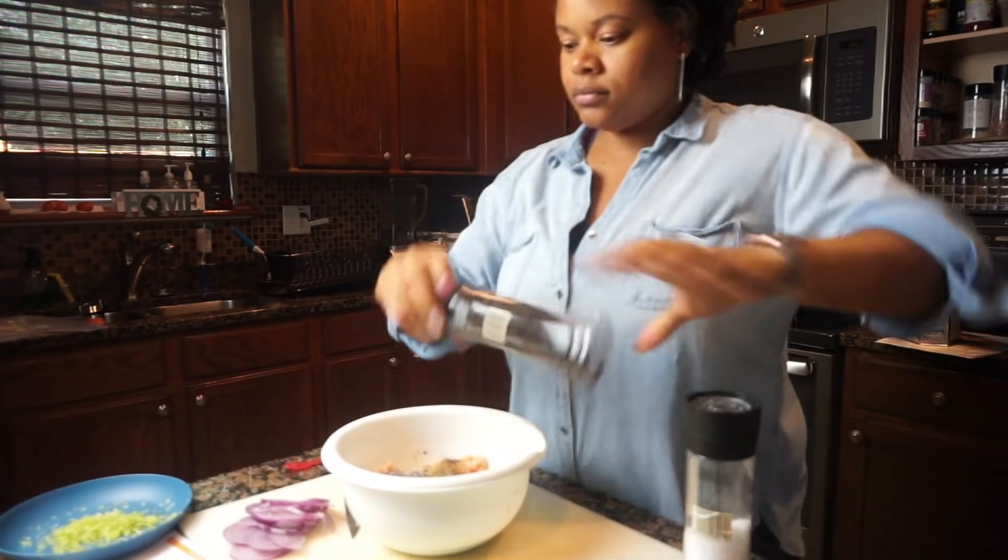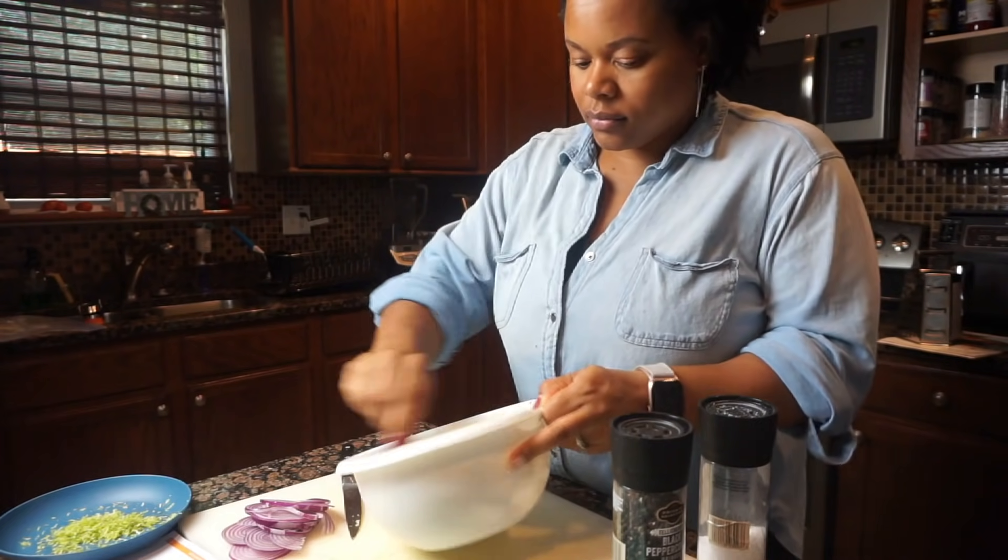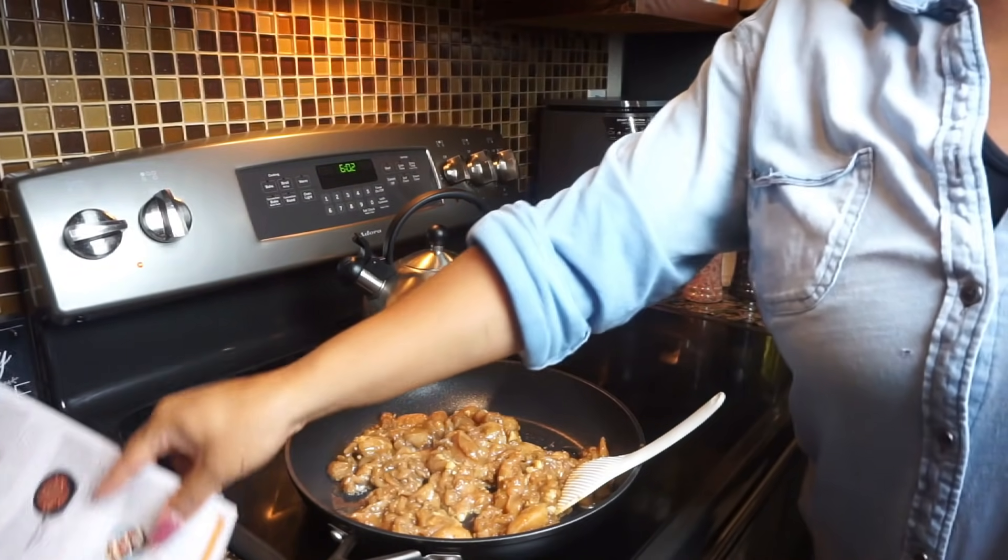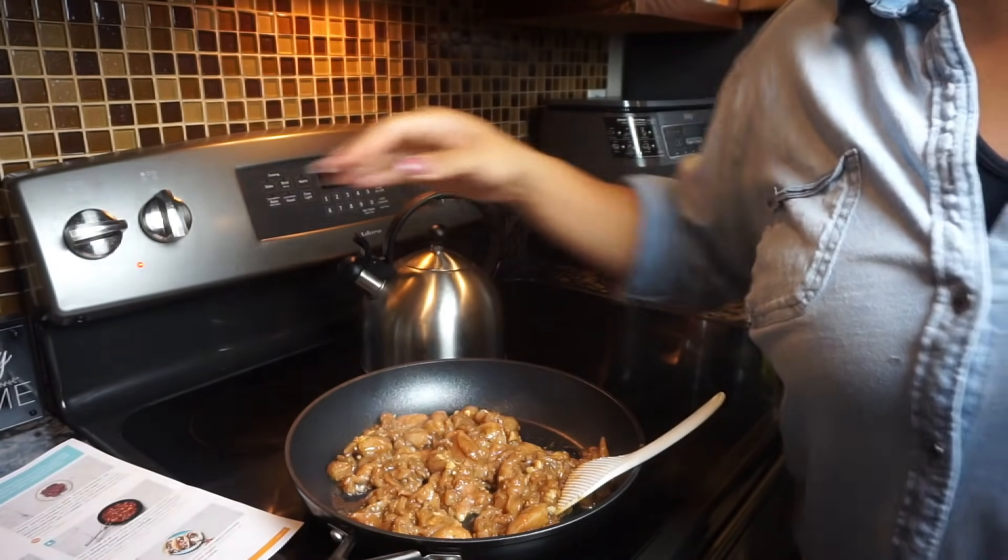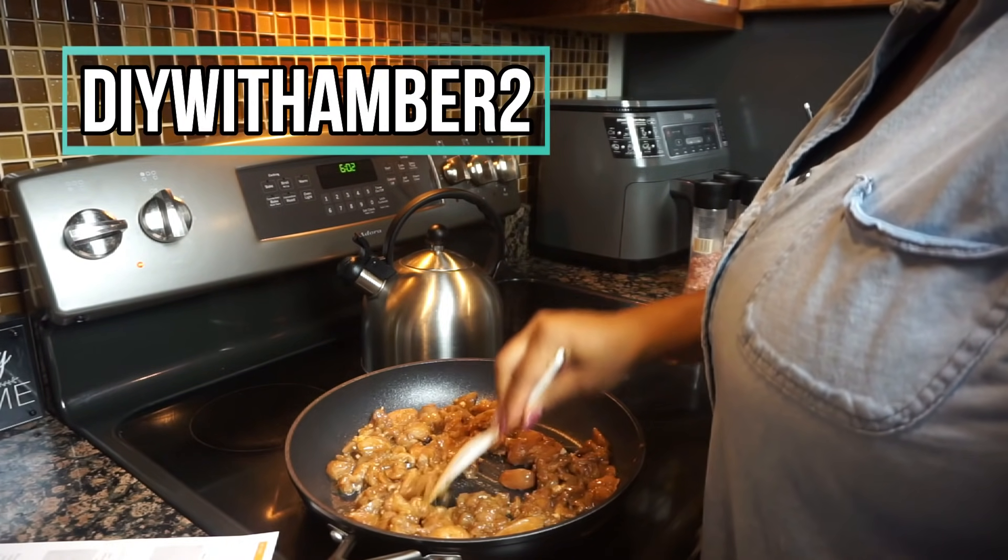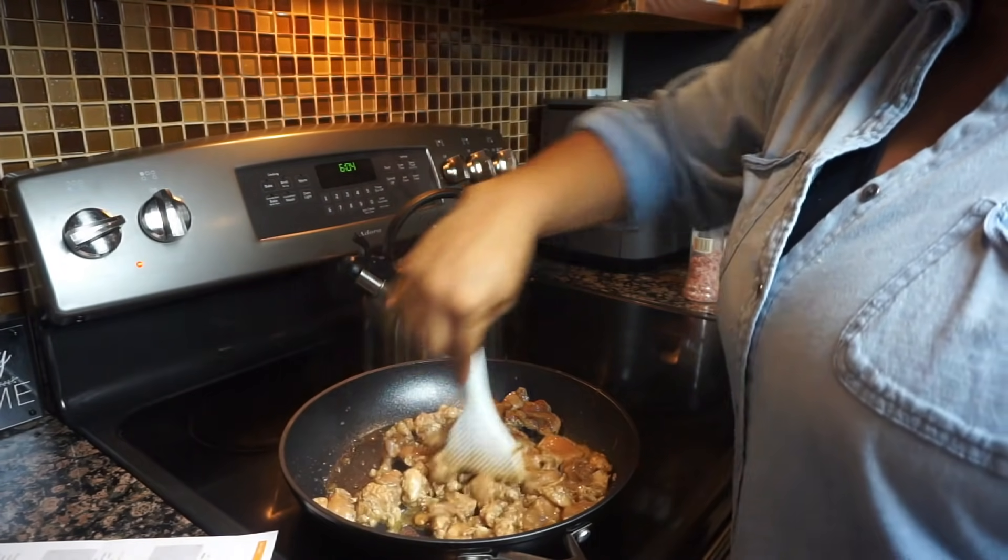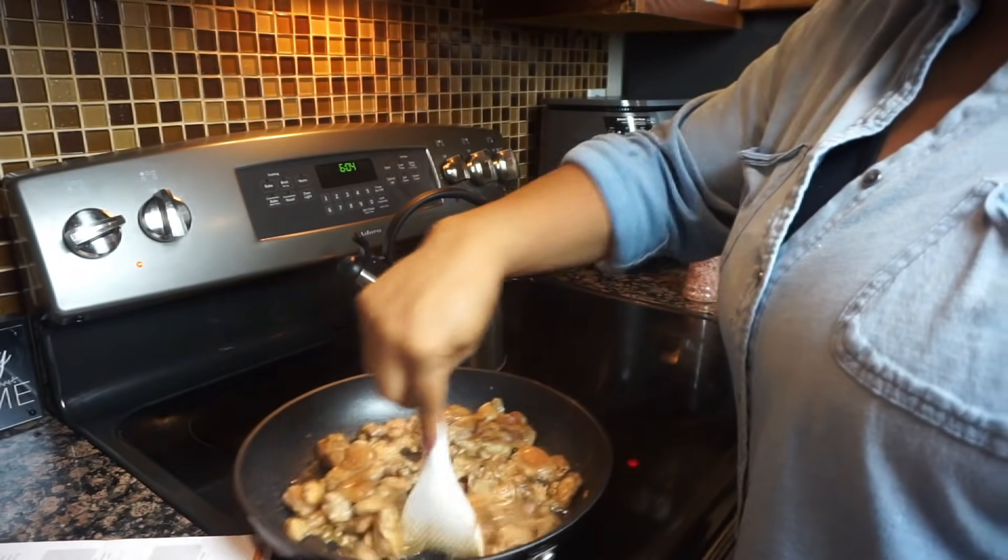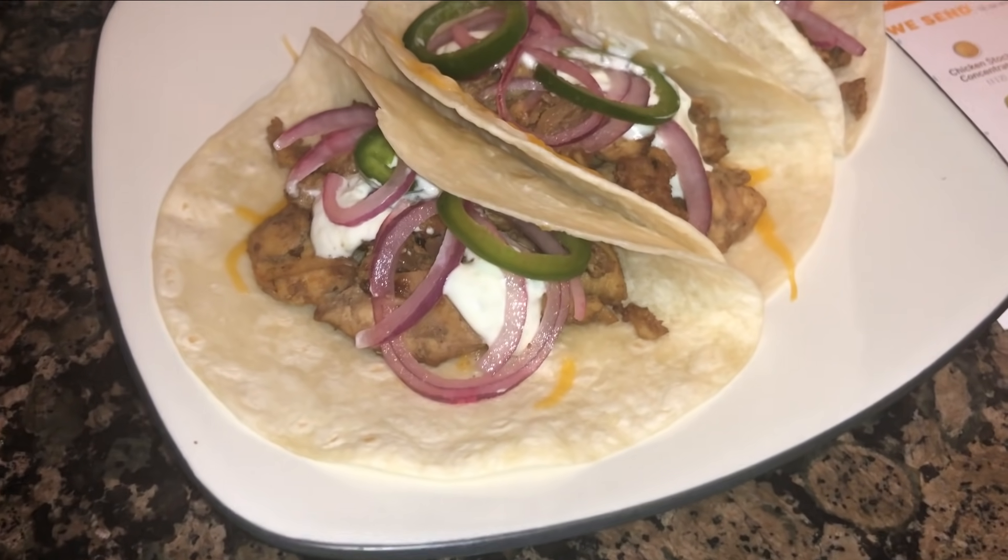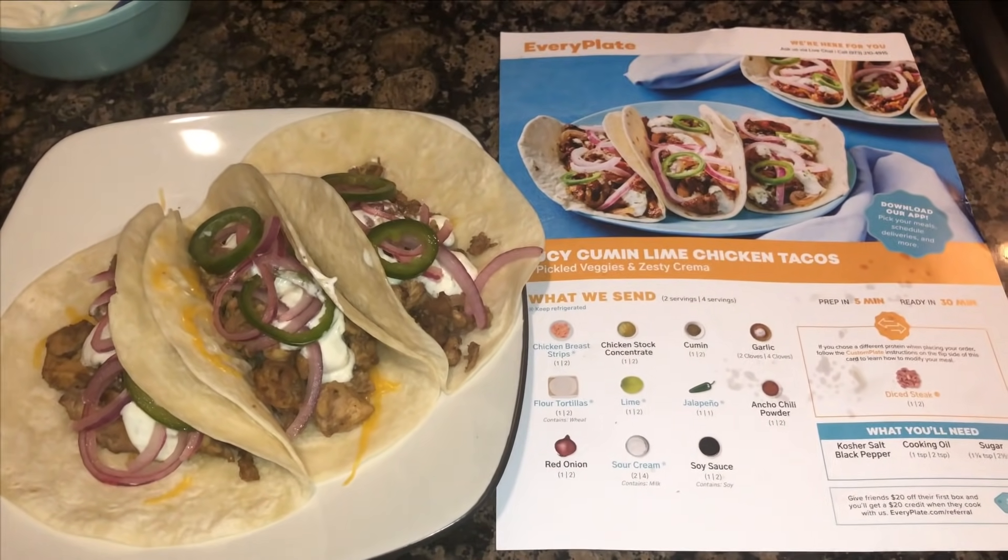So, when you sign up, you can choose your meals. They get delivered right to you on the day that you choose and you're good to go for the week. So, if you know that this will be a great decision for you and your family, use my special code at checkout DIYWITHAMBER2 and you can get EveryPlate for just $1.99 per meal and an additional 20% off of your next two boxes. Just go to everyplate.com and enter my code DIYWITHAMBER2. Alright dolls, let's go ahead and get back to the DIYs.